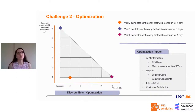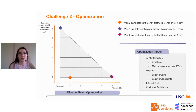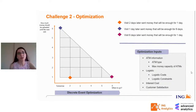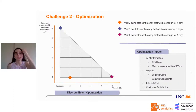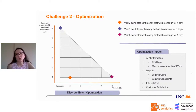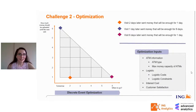Besides cash-in and cash-out predictions, optimization also takes other inputs, constraints, and parameters. For example, ATM type — some ATMs allow recycling, and this must be considered. Money capacity of ATMs also varies. Logistic cost differs from ATM to ATM, some ATMs cannot be visited during weekends, and there is an interest cost for keeping money in the ATM. Last but not least, customer satisfaction is treated as a penalty factor with a very large punishment, so optimization will never choose a stockout decision. Optimization evaluates the cost of all 21 points in the triangle and chooses the minimum as the final decision for each ATM.